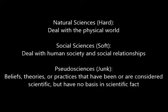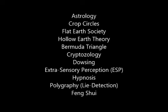A pseudoscience is defined by the Oxford Dictionary as simply a collection of beliefs or practices mistakenly regarded as being based on scientific method. That doesn't really help us much, as the definition is rather vague. However, the website yourdictionary.com gives several examples of pseudosciences. Here is a list: Astrology, Crop Circles, Flat Earth Society, Hollow Earth Theory, Bermuda Triangle, Cryptozoology, Dowsing, Extrasensory Perception (ESP), Hypnosis, Polygraphy also known as Lie Detection, and Feng Shui.